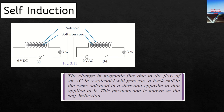But if you are connecting an alternating current, there will be a continuously changing magnetic field — a continuously changing magnetic flux associated with the coil. The change in magnetic flux due to the flow of AC in a solenoid will generate a back EMF in the same solenoid in a direction opposite to that applied to it.